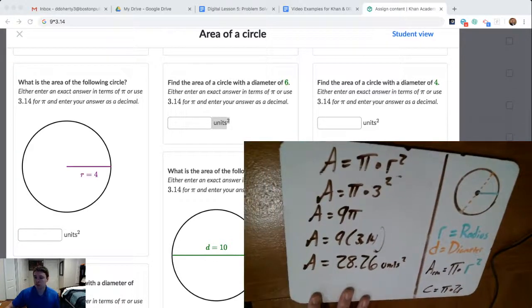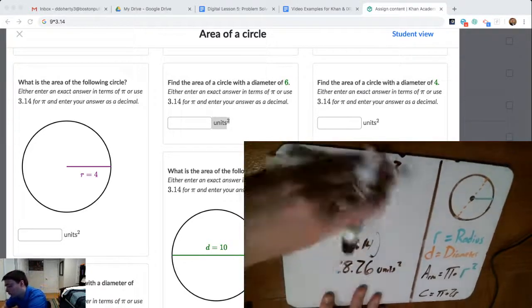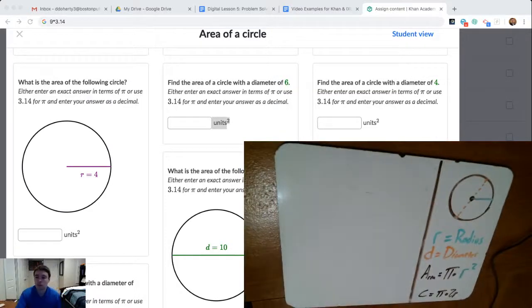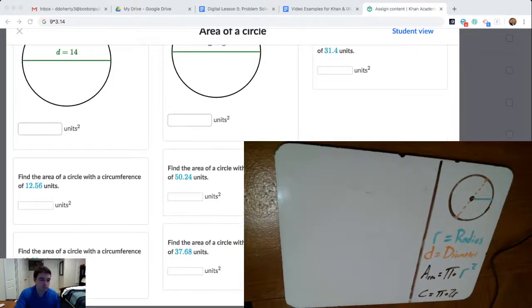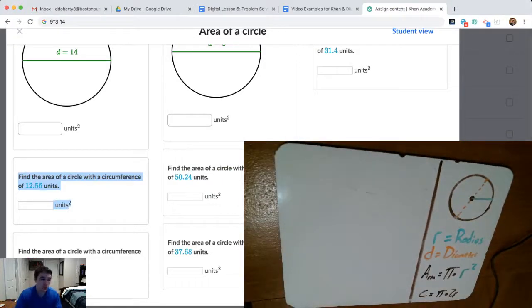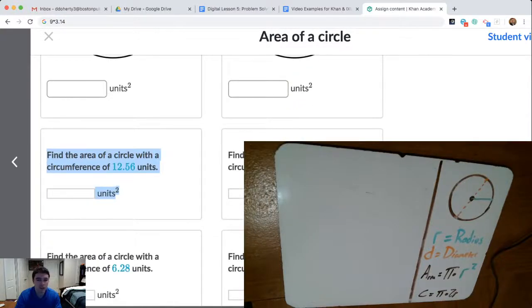The last one we're going to show you, to keep you thinking, there's probably a challenging one or two problems at the end of this assignment where they provide you with the circumference of the circle. So I'm going to find one of those and highlight it on my screen. We're told find the area of a circle with a circumference of 12.56 units. So it says find the area here, this is the problem we're going to focus on, of a circle with a circumference of 12.56 units.